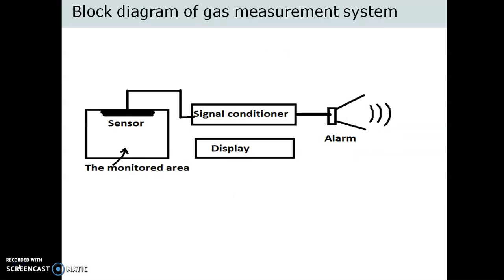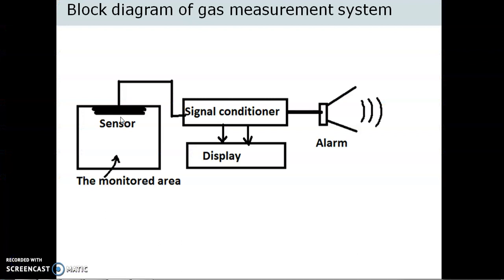Now, let us understand the block diagram of gas measurement system. A suitable semiconductor gas sensor is placed at the top ceiling of the area to be monitored. The output of the gas sensor is applied to a signal conditioner that consists of Wheatstone bridge circuit, power supply, and amplifier. The signal conditioner output is then given to an alarm or display. As soon as the presence of the particular gas goes above the predefined value, the resistance of the gas sensor decreases significantly and the alarm is turned on.